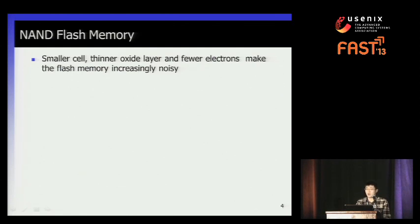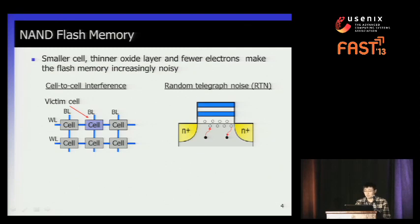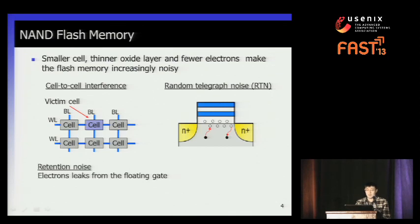Here are at least three main noise sources. The first is cell-to-cell interference: a flash cell suffers interference when its neighbors are being programmed or erased. The second is random telegraph noise: charge traps in the oxide layer randomly capture and emit electrons, changing the threshold voltage. The last is retention noise: electrons leak from the floating gate as time elapses, also changing the threshold voltage and the data stored.